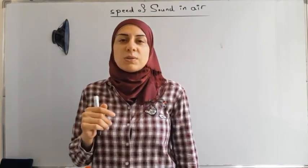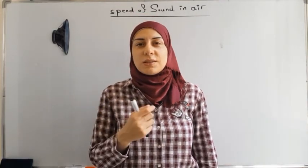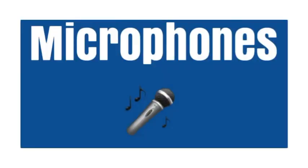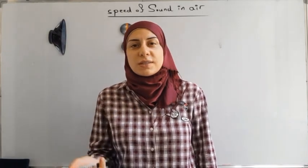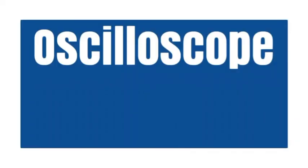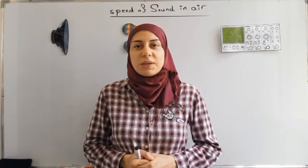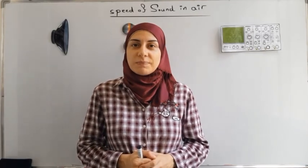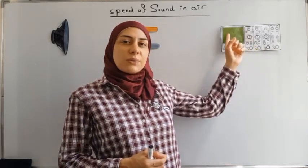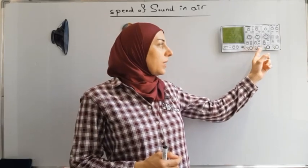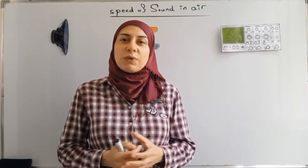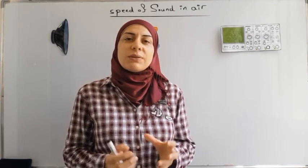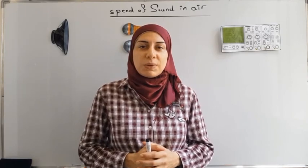We also need a loudspeaker. The loudspeaker converts the electric signal into sound waves. We need two microphones. The microphone is the device that converts a sound wave into an electric signal that we can study. The oscilloscope is a device used to measure and display the voltage of an electric signal. It has a screen and two entries — channel 1 and channel 2 — for measuring two voltages at the same time. You can see each voltage alone or together on the same screen in order to compare between them.